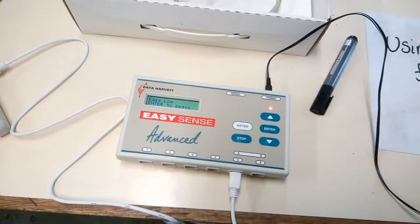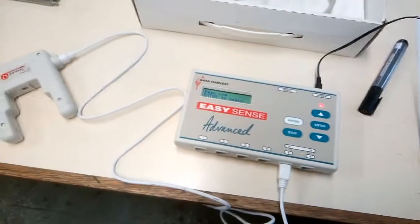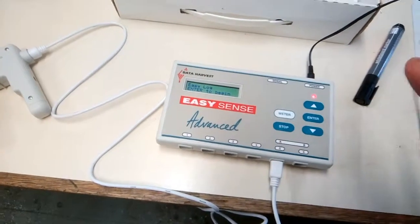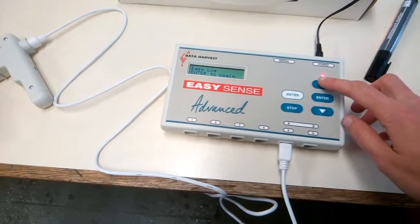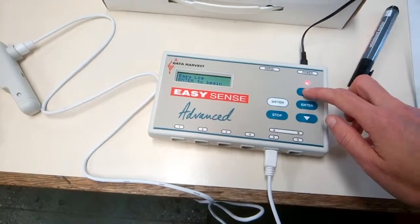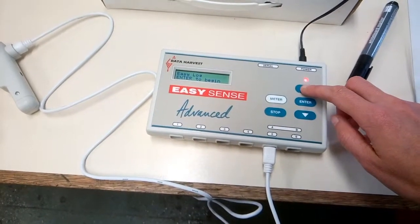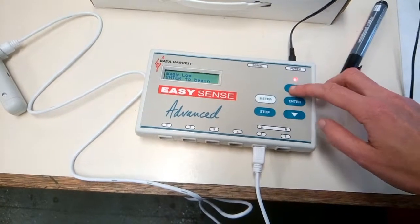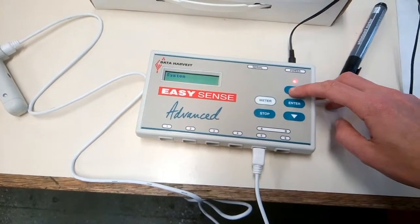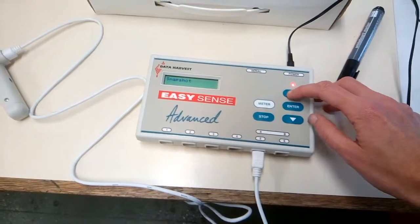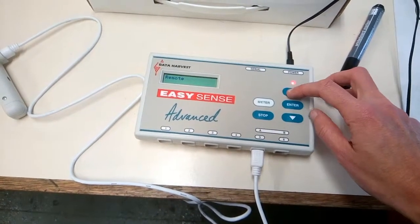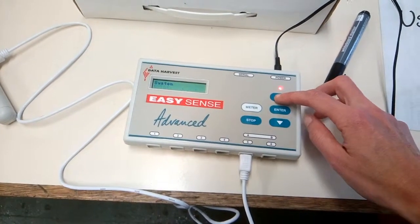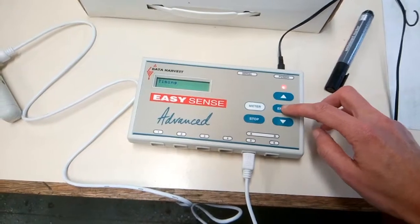What you're going to do to set it up so that you can just use it for timer, it says easy log, enter to begin. We're not going to use easy log. So what you're going to do is either press the up or the down arrow, and you're going to scroll through the different options. Don't press enter. Go up and down. You see we've got system, timing, snapshots, fast log, remote, meter, and then we're back to the start screen. Just press it so we've got timing.